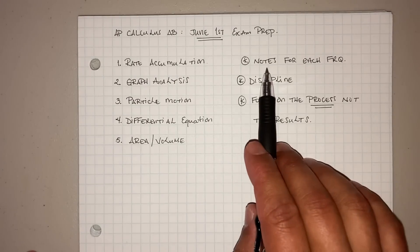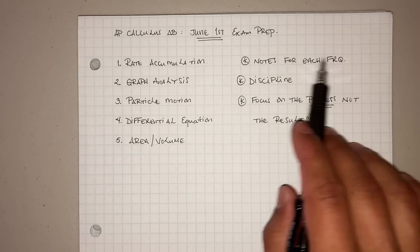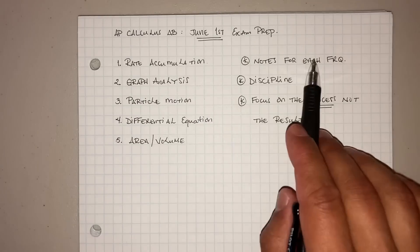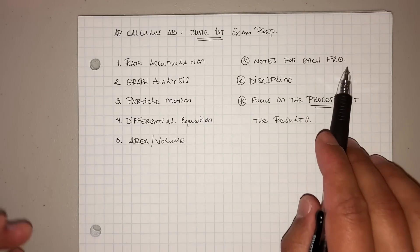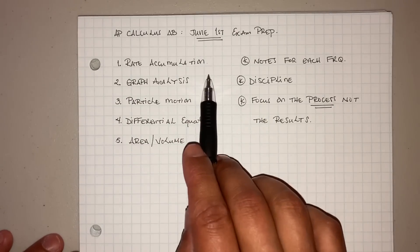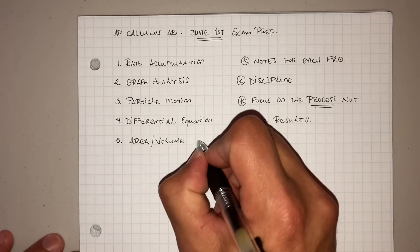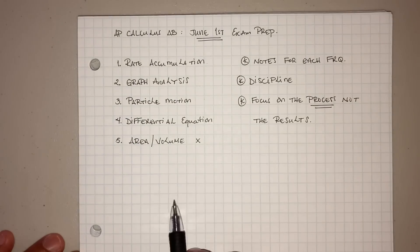Now, these are just little side notes here. When you're getting ready, have your little stack of notes because you can use notes for this year's exam. One little stack of notes for rate accumulation, another one for graph analysis, and so forth. Remember, this guy, area and volume, is not going to be on the test.